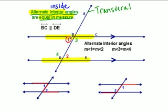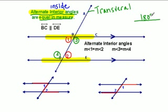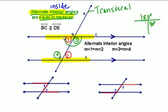Angles 1 and 3 do not have the same measure, and angles 4 and 2 do not have the same measure. Only angles 1 and 2, and angles 3 and 4 are equal. Remember, a straight line equals 180 degrees, so for two side-by-side angles to be equal they'd each have to be 90 degrees. Angle 1 is clearly not 90 degrees and angle 3 is bigger than 90, so they are not the same.